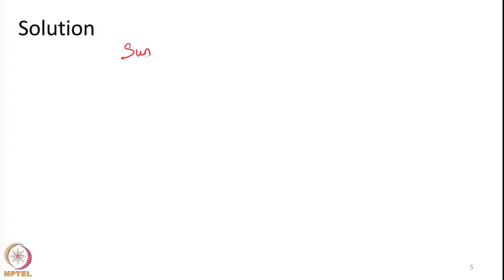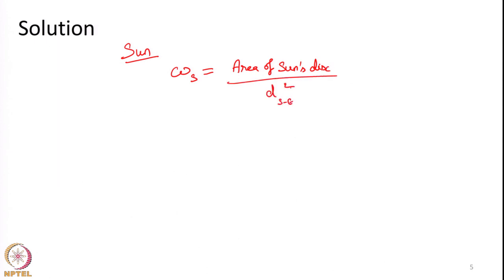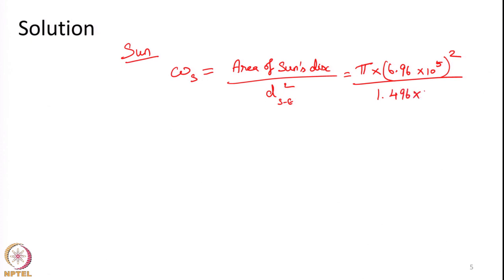Next we calculate the solid angle subtended by the sun. The solid angle subtended by the sun at earth equals the area of the sun's disc divided by the square of the distance between sun and earth. The radius of the sun is 6.96×10⁵ km, and the distance between sun and earth is 1.496×10⁸ km. Calculating this, we get 6.79×10⁻⁵ steradians.